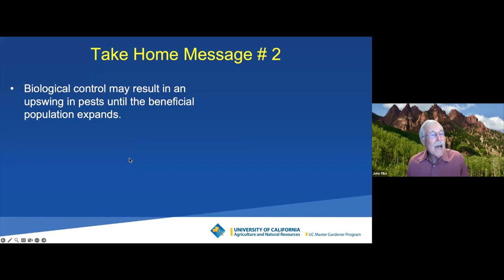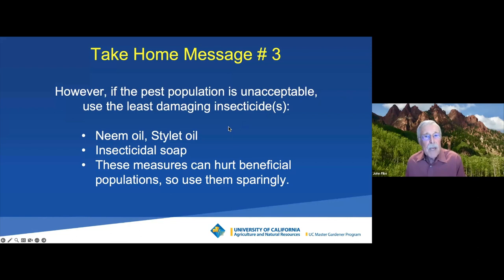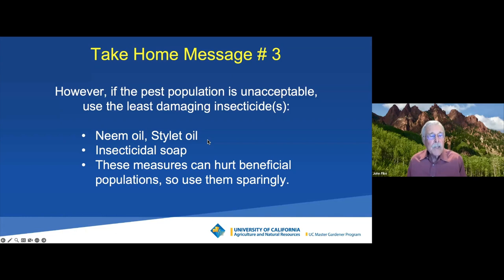Sometimes the pest population gets unacceptable and we have to use insecticides. But if you do, there are a number that are pretty benign — benign to you, your children, your grandchildren, your pets, and the environment. The oils — neem oil, stylet oil, which is a mineral oil with emulsifiers added so you can dilute them in water and spray. The oils and insecticidal soaps cover the insect and clog up the breathing holes called spiracles, so they suffocate. The UC recommends you don't make your own insecticidal soap because not all soaps are equal and they can burn your plant — go buy one. These are the way to handle most sucking insects like aphids, mealybugs, and whiteflies.